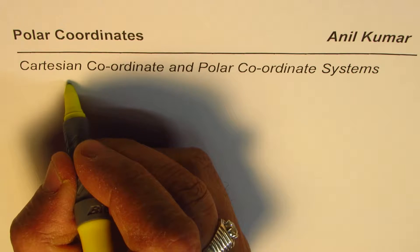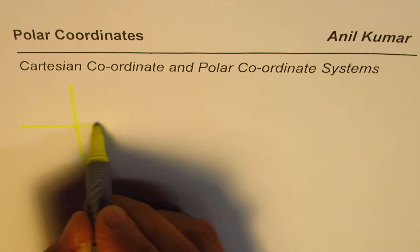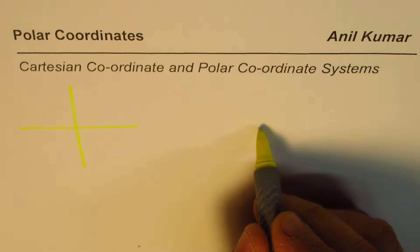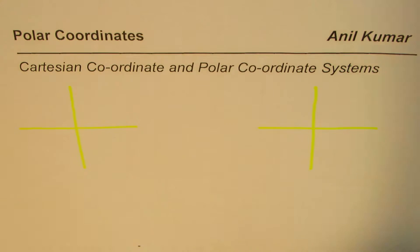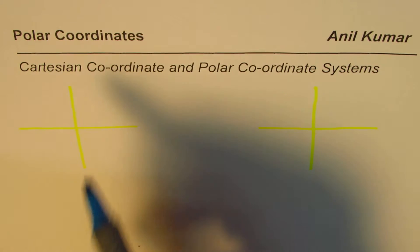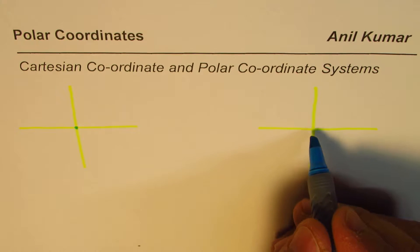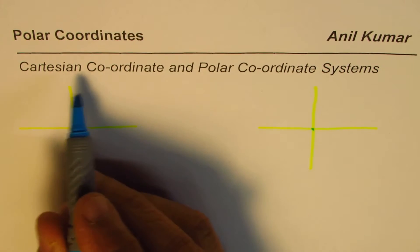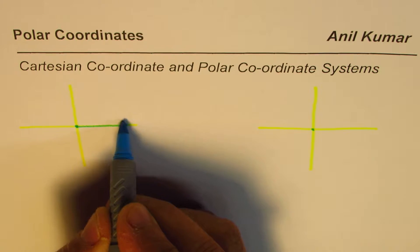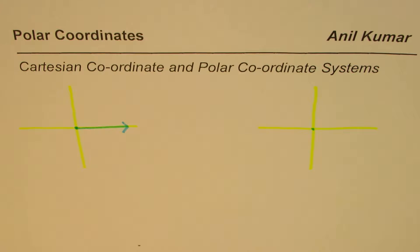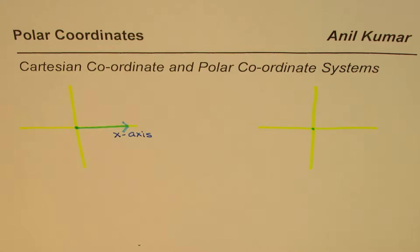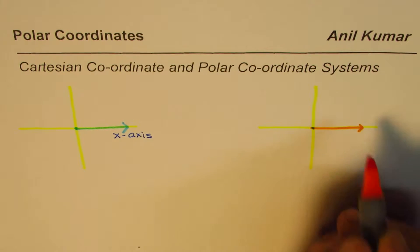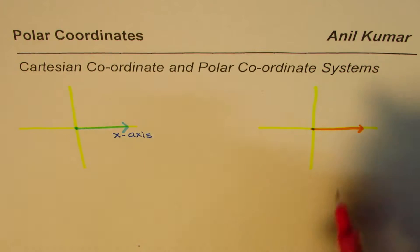To begin with, in Cartesian coordinates we have X and Y axes. I'm making a similar axis to represent the polar coordinate system, so we'll draw a parallel between the two. In Cartesian coordinates, the rightward direction is called the X axis. In the polar coordinate system, we call this the polar axis.